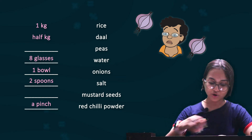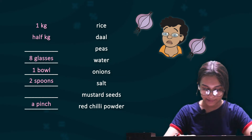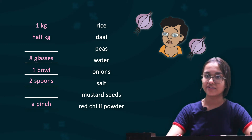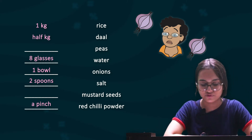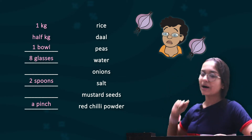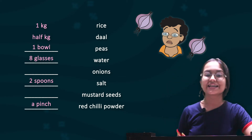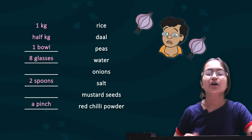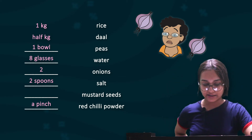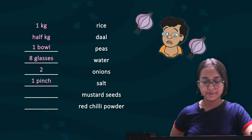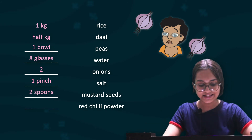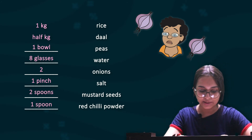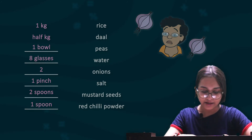Let me repeat the complete answer so you don't get confused. The correct recipe amounts are: 1 bowl of peas, 8 glasses of water, 2 onions, 1 pinch of salt, 2 spoons of mustard seeds, and 1 spoon of red chilli powder.